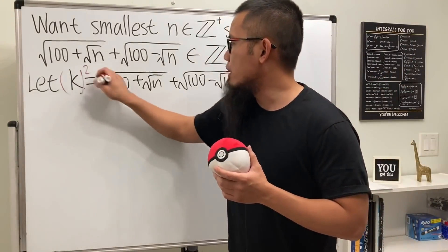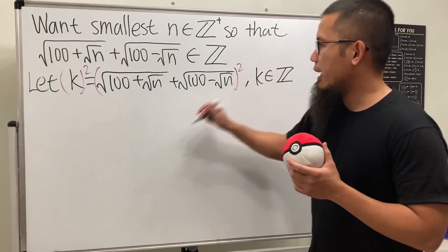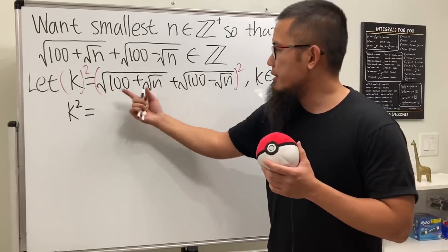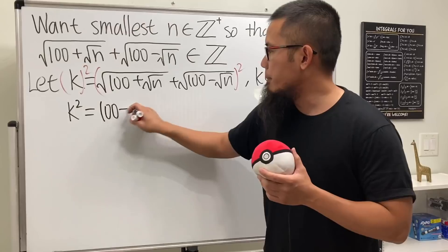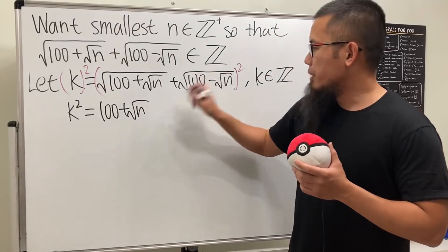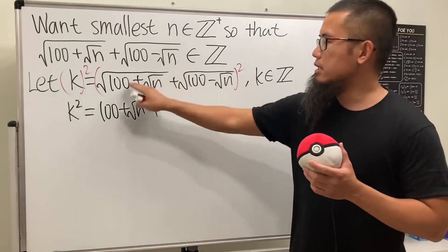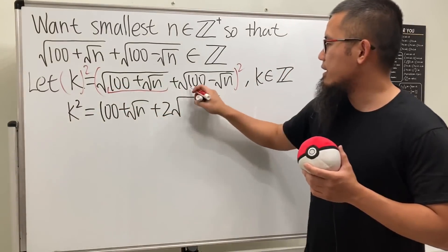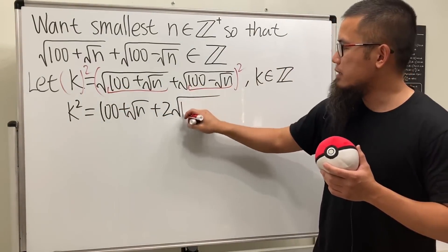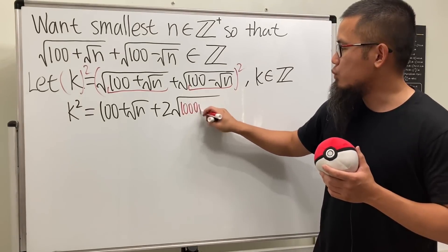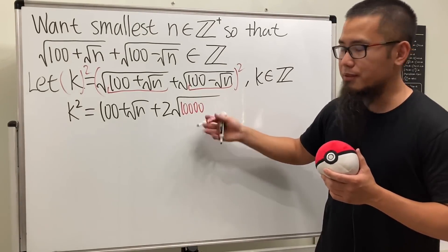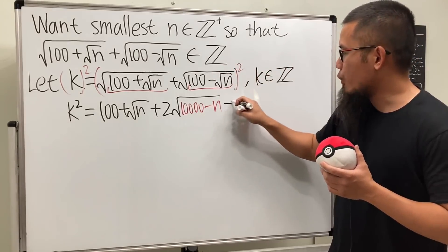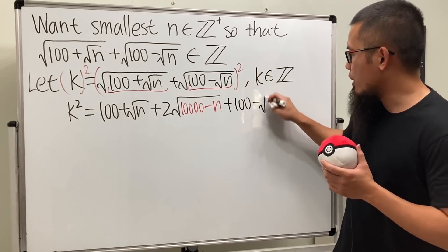Let's go ahead and square both sides. We get k squared equals this thing squared, which is 100 plus square root of n, plus two times the product of the two terms — which gives us two times the square root of (100 plus √n)(100 minus √n) — plus (100 minus square root of n) squared. The inside product gives us 100 squared minus n, which is 10,000 minus n.